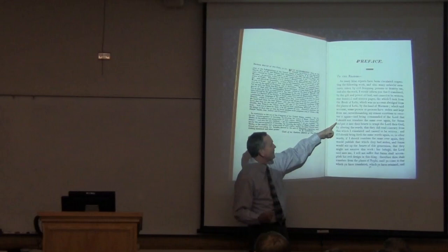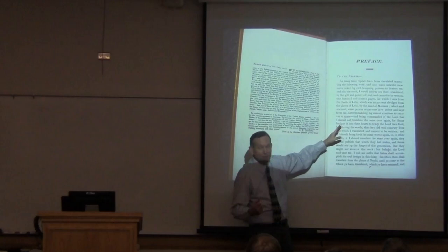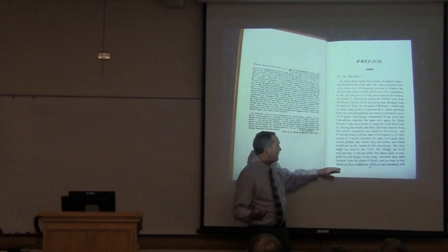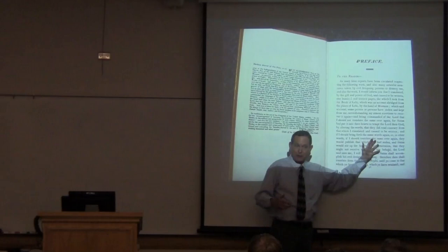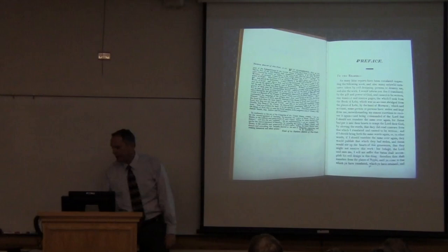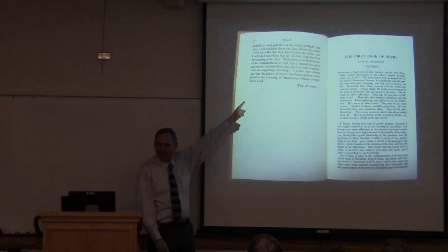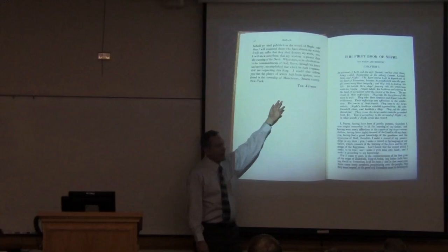Being commanded of the Lord he should not translate the same again, he's quoting Section 10: 'You shall translate from the plates of Nephi, until you come to that which you have translated, meaning about Mosiah, which you have retained.' Behold, you shall publish it as the record of Nephi, and thus will I confound those who have altered my words. Signed, the author — and of course he wasn't really the author, but he was the English translator, Joseph Smith.